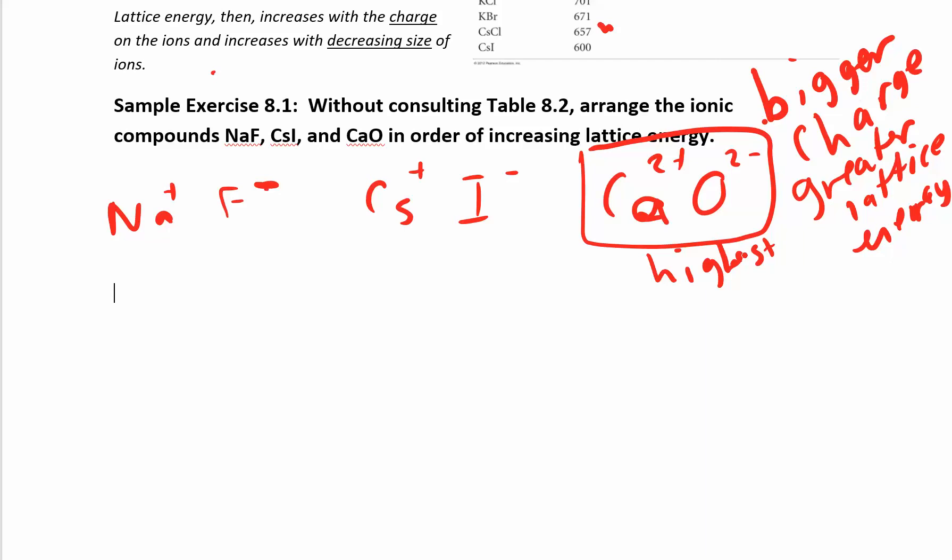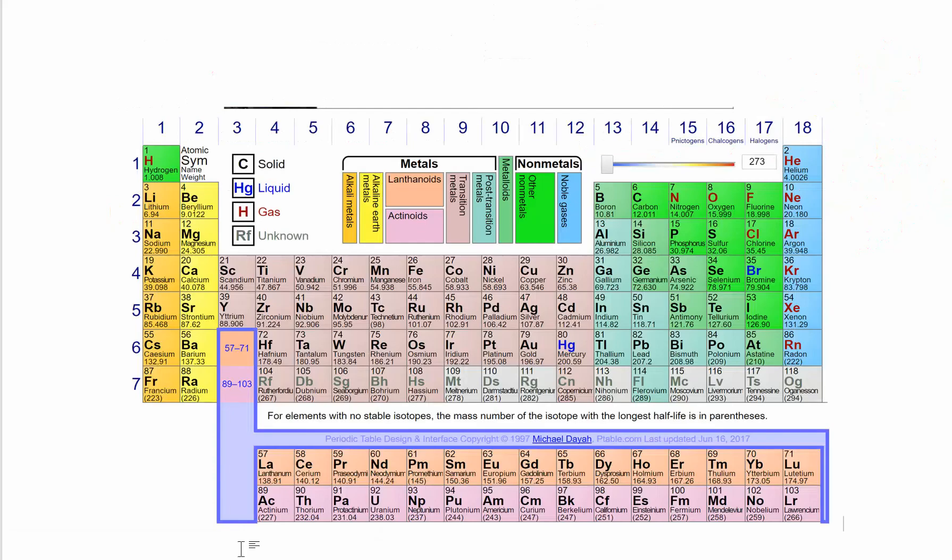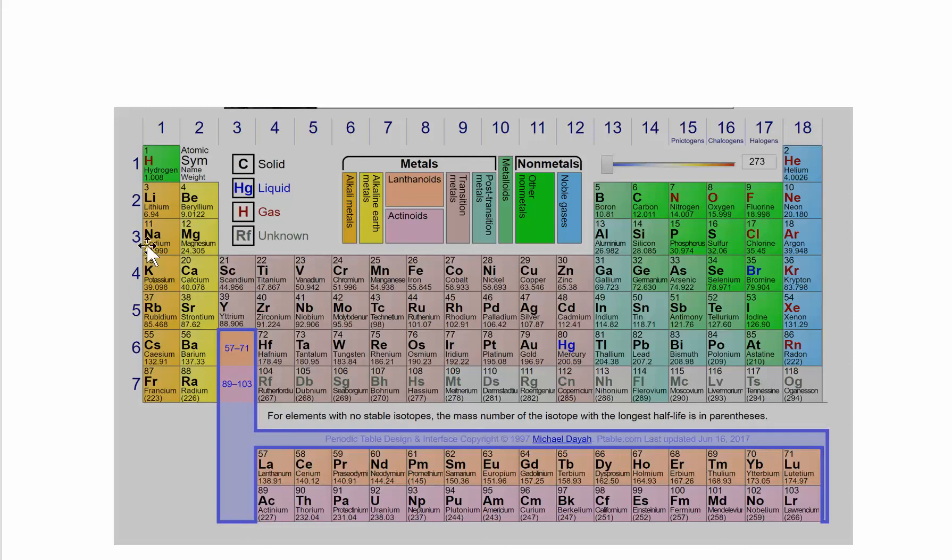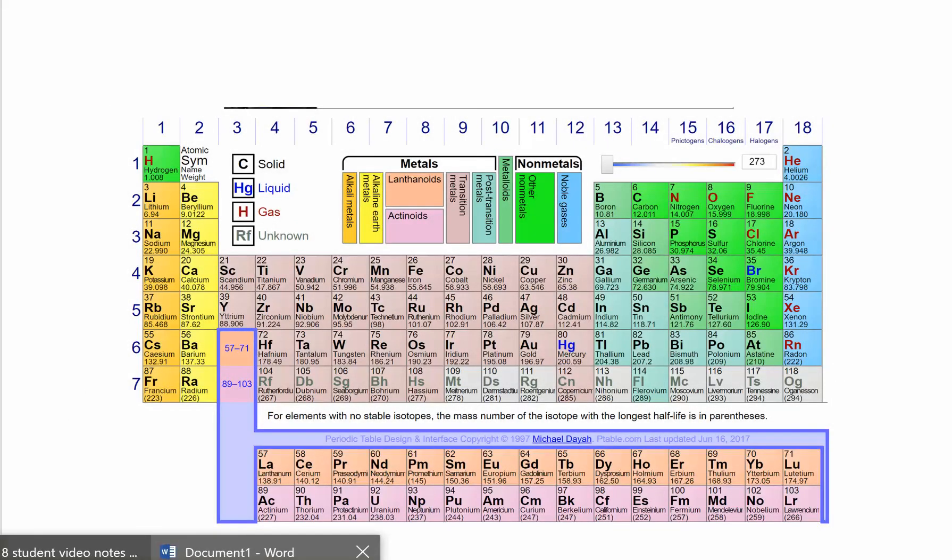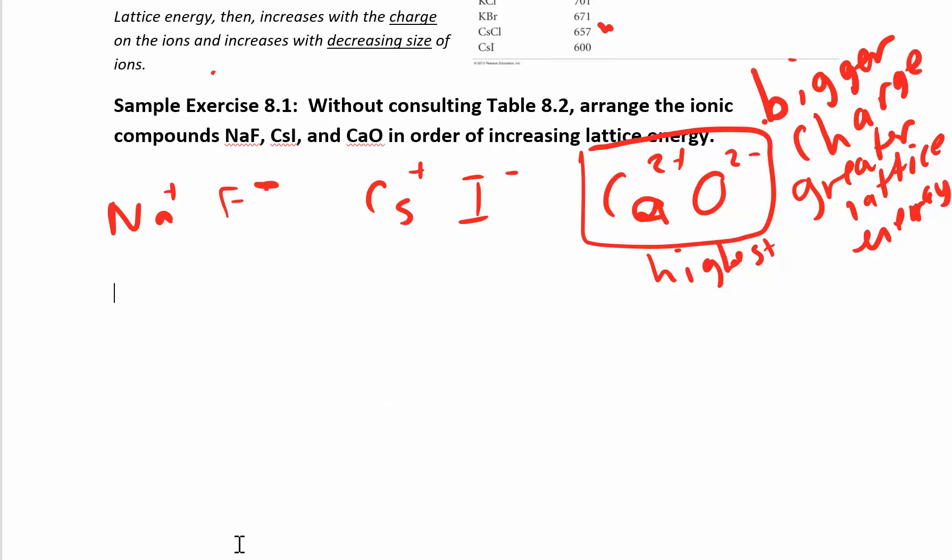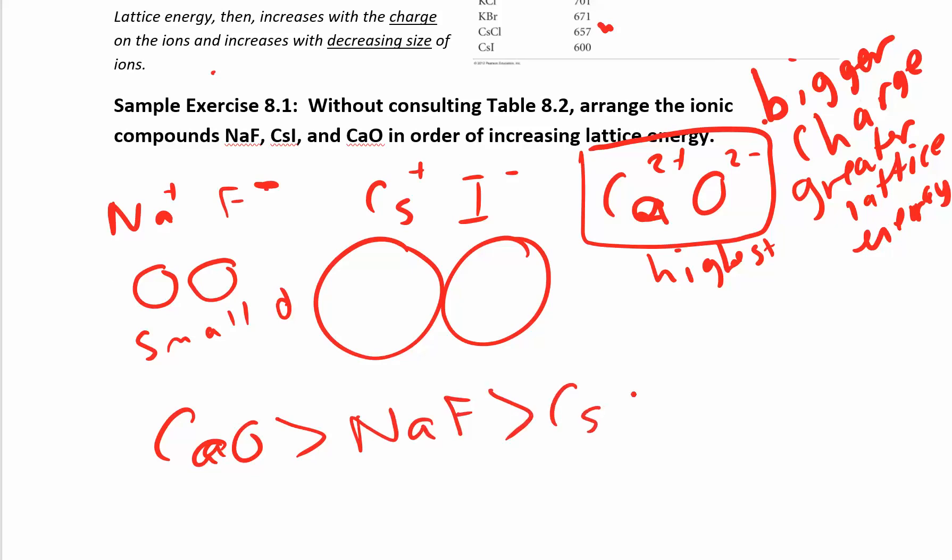Now for the second highest, we're looking at the size of the atom. We're trying to find the smaller one. We have to compare sodium and cesium. Going back to chapter seven, you can see that sodium is up here. Sodium is smaller, then cesium is going to be bigger. The same thing with the fluoride and iodide ions. If we think about what these really look like, sodium is smaller and then CsI would be way bigger. So this is the smaller distance, and it's going to have a greater energy than the other one. So CaO has the greatest energy followed by NaF and then CsI.